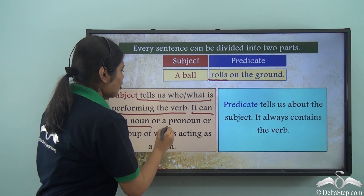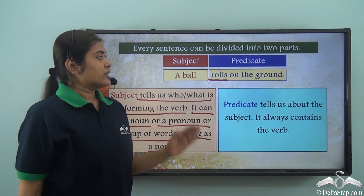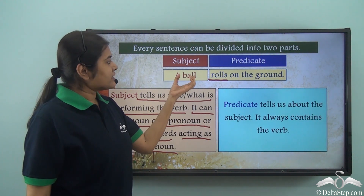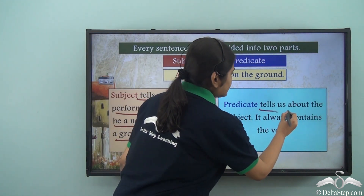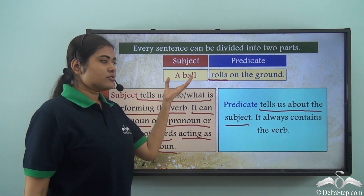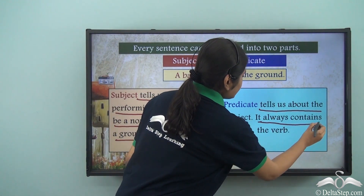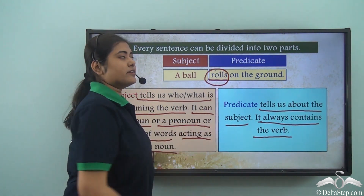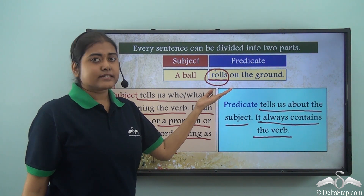A subject can be a noun, a pronoun, or a group of words acting as a noun. In this case, what do we have as the subject? A noun and an article which is modifying the noun — so 'a ball' is the subject. Now what is the predicate? A predicate tells us about the subject. Here, 'rolls on the ground' is telling us about the ball. It should be noted that the predicate always contains the verb. So 'rolls' is the verb and it is an essential part of the predicate.